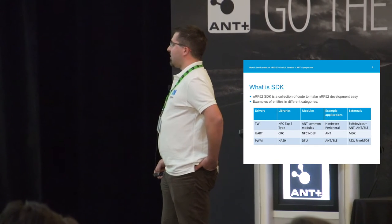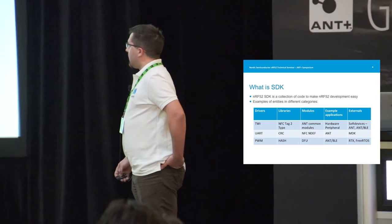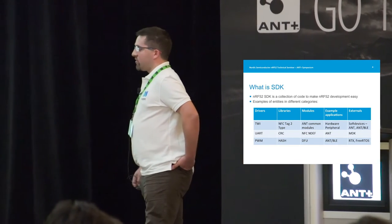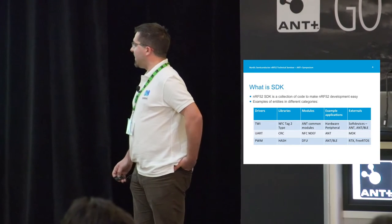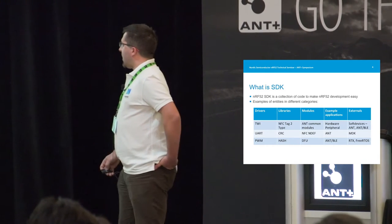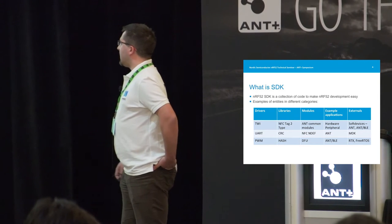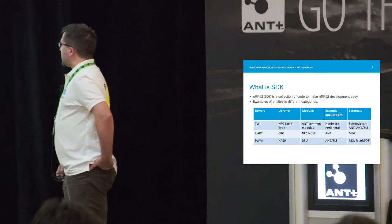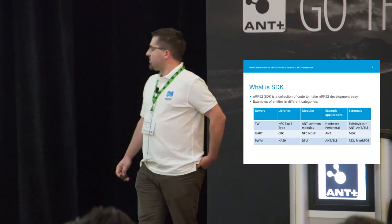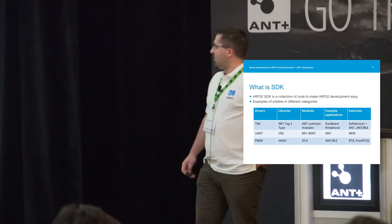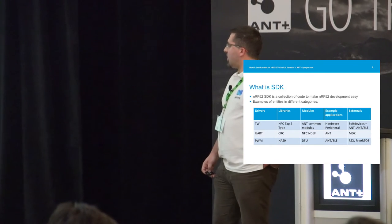We have general libraries like CRC, hash, or a library for NFC. We have software modules which are more specialized, like ANT common modules, like NFC and DEF protocol implementation, like device firmware update. We have application examples for hardware peripherals alone, for ANT, ANT BLE, and for BLE. And of course we have some externals. You can find soft devices in hexadecimal form, MDK headers needed to access registers, and we also incorporate RTOSs. In the current SDK we have RTX RTOS, but in the upcoming release we will also add FreeRTOS.